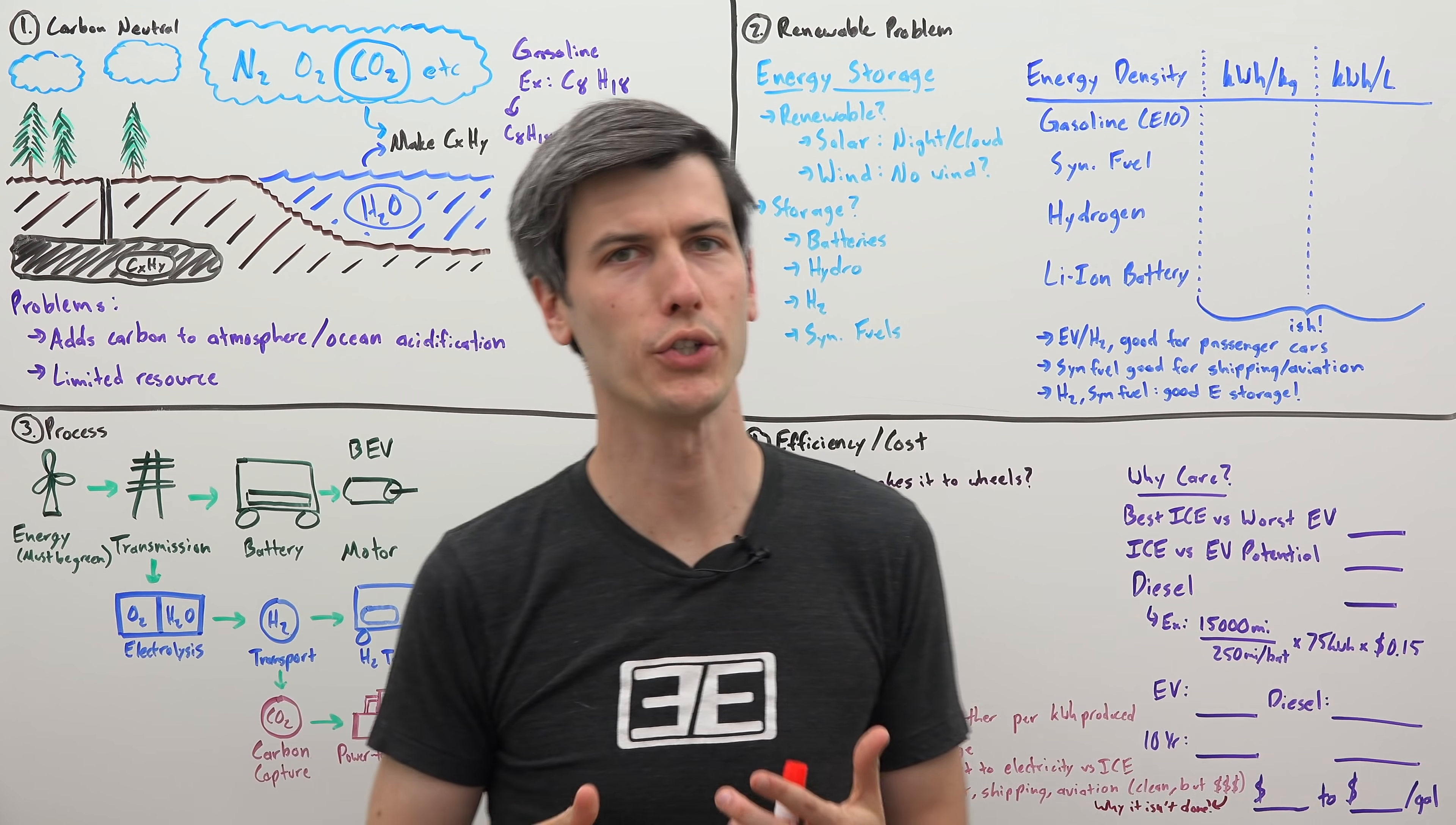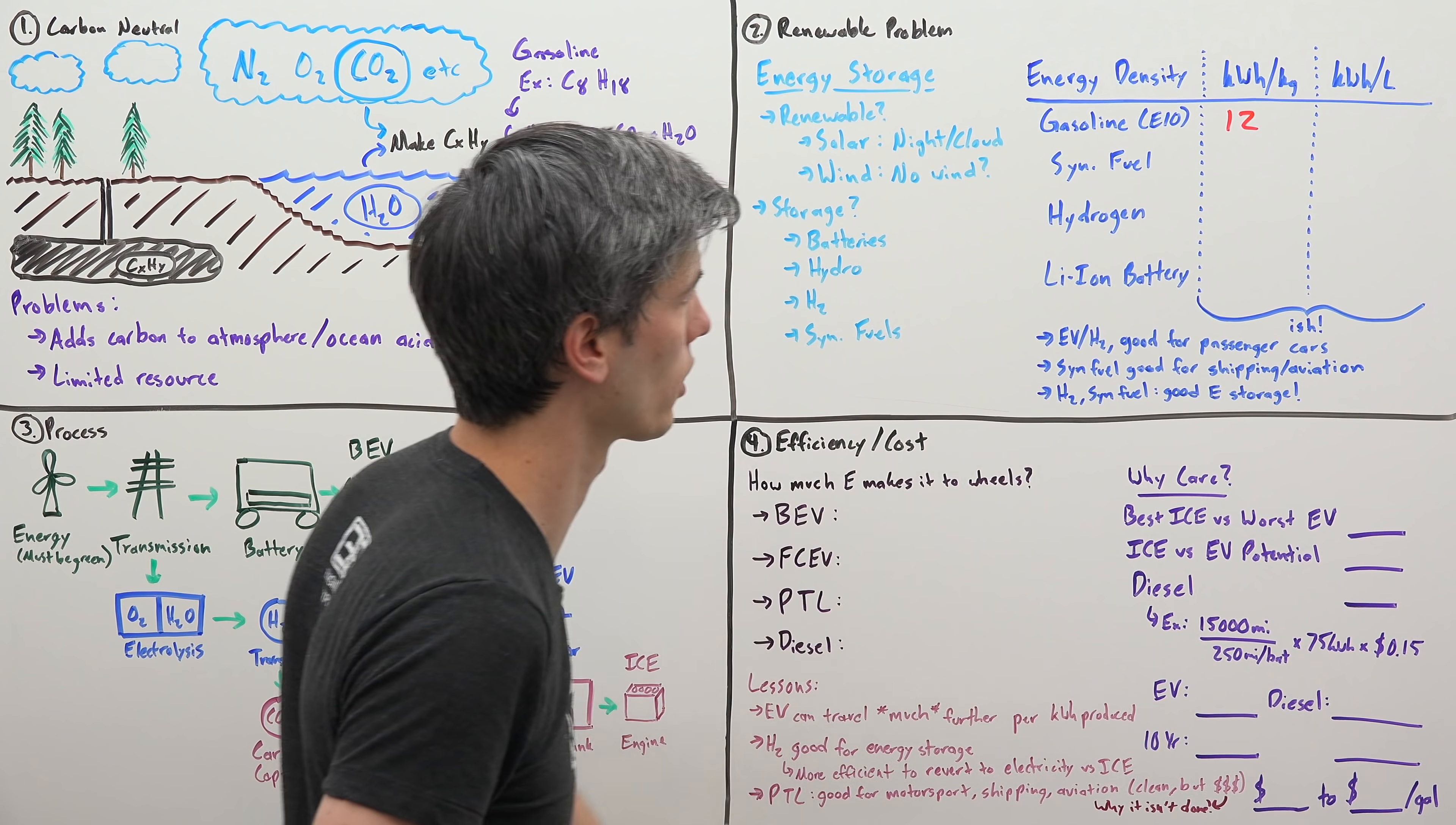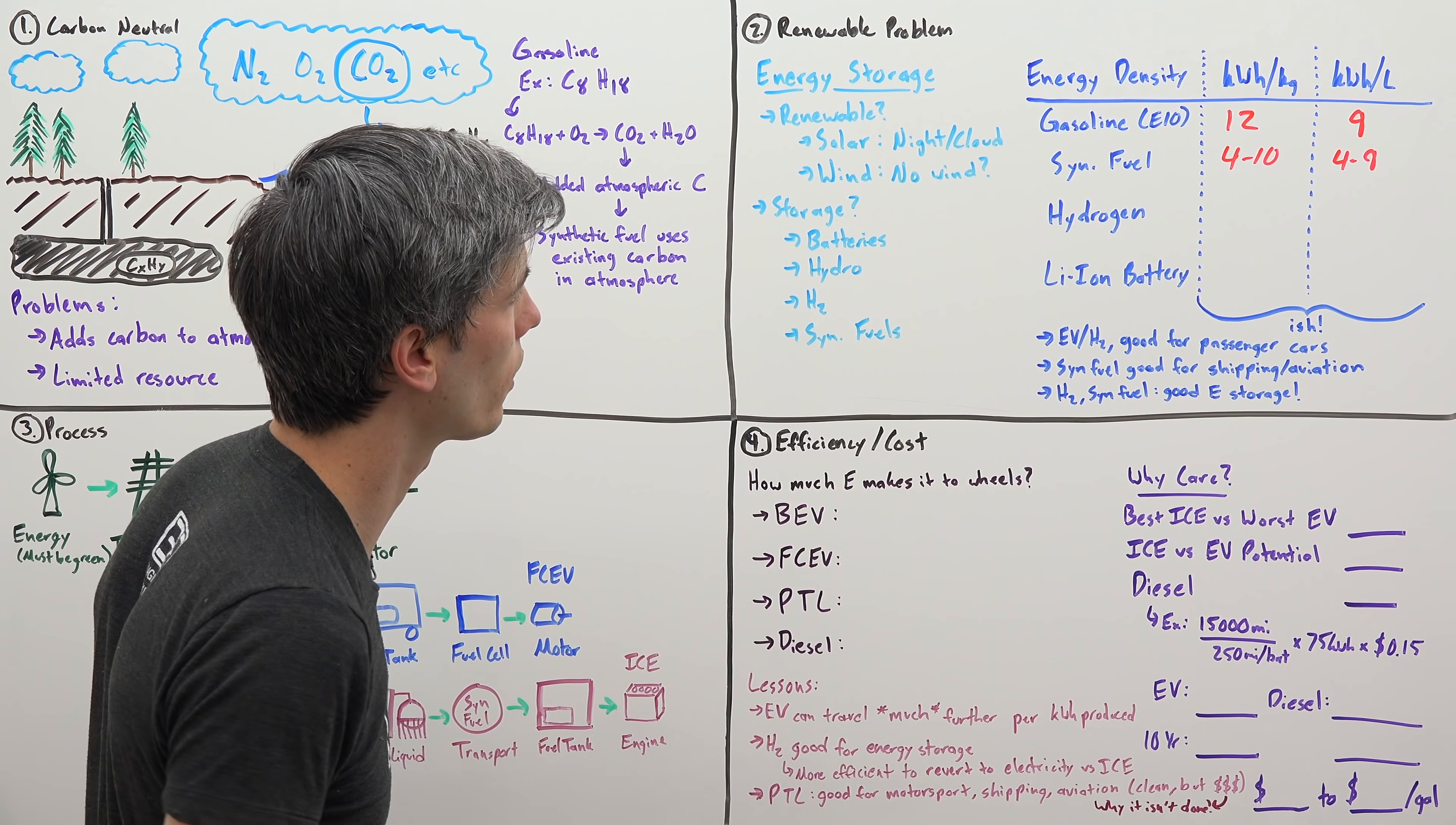There are many different ways that you can store energy. You can put it in a battery, in water in a water tower with potential energy, as hydrogen, or in a synthetic fuel. So why would you want to store energy as a synthetic fuel? When you start to look at energy density, it starts to make sense. Gasoline E10 in the United States has an energy density of about 12 kilowatt hours per kilogram, about 9 kilowatt hours per liter. A synthetic fuel, generally speaking, about 4 to 10 kilowatt hours per kilogram by mass, and about 4 to 9 kilowatt hours per liter.